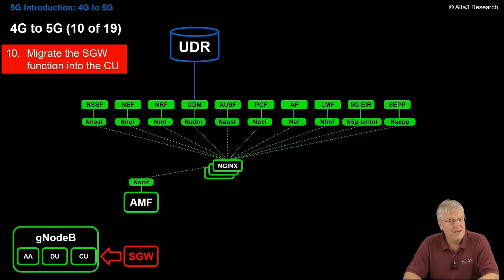In 4G, we had an SGW. But we're not going to have one of those in 5G. So we push the SGW services into the CU. And the SGW goes away.